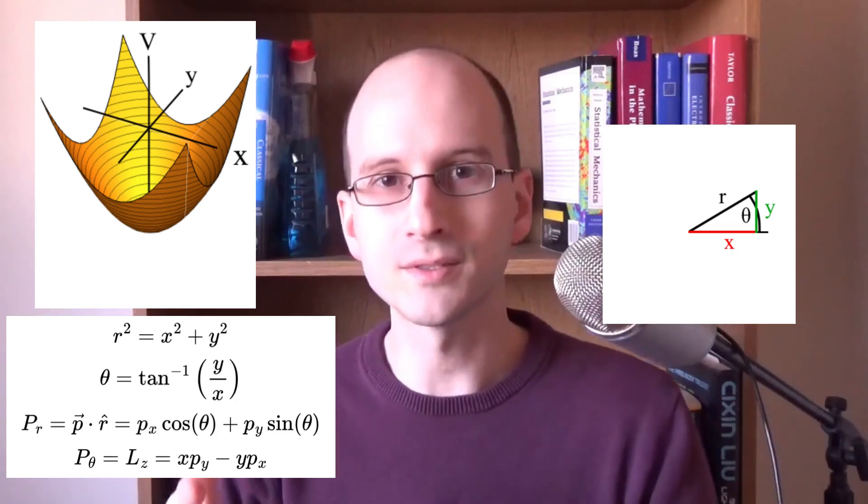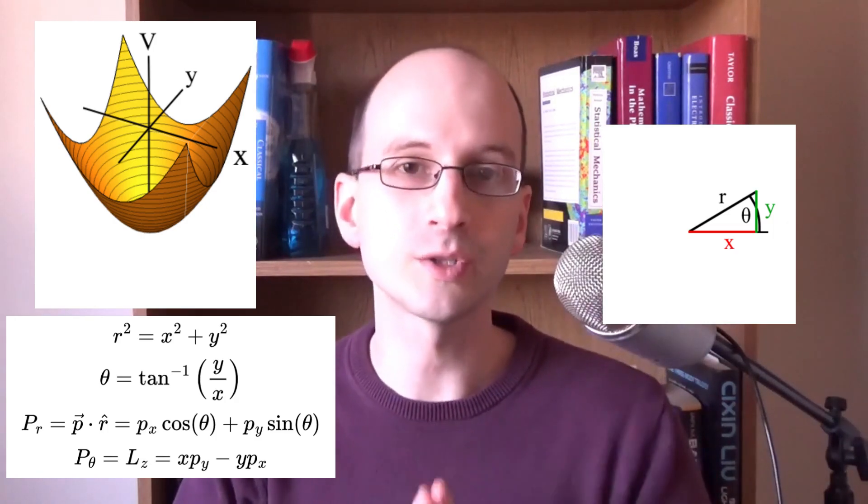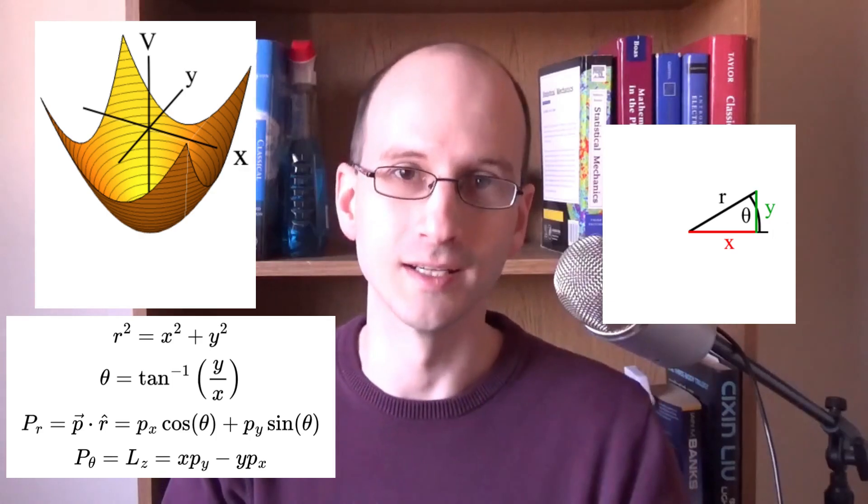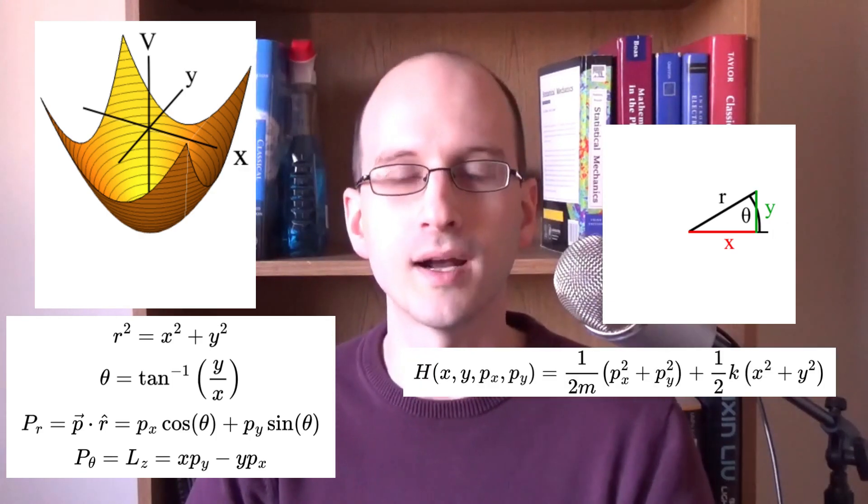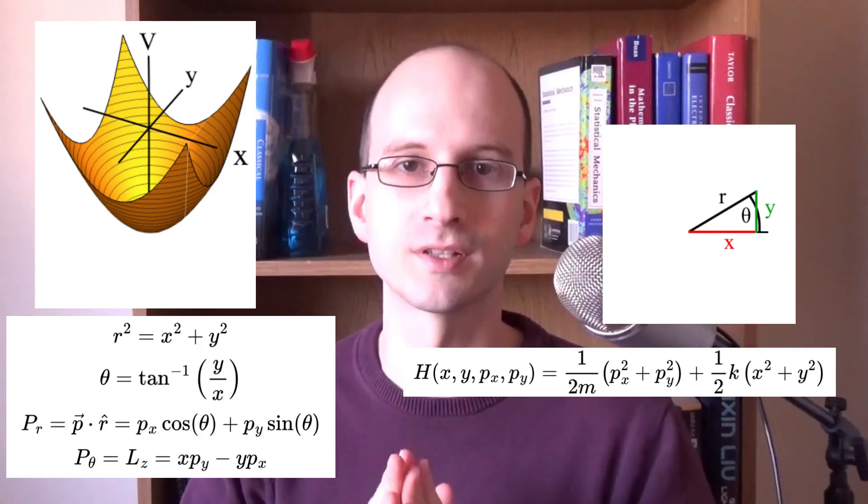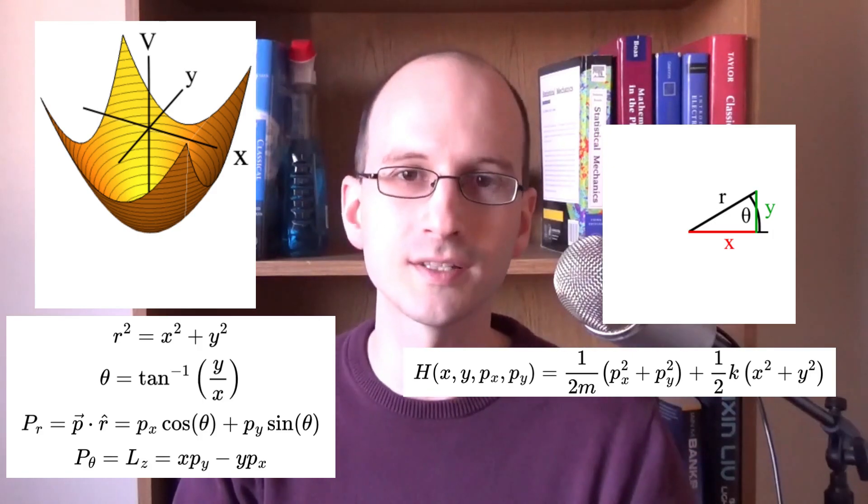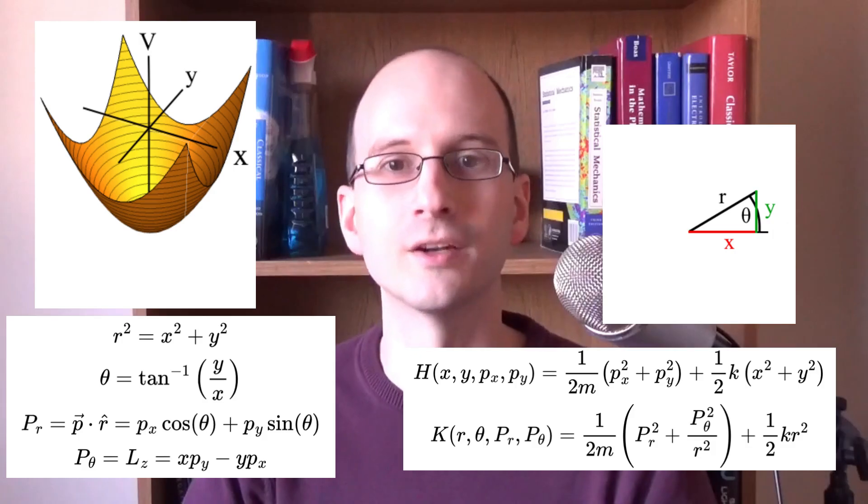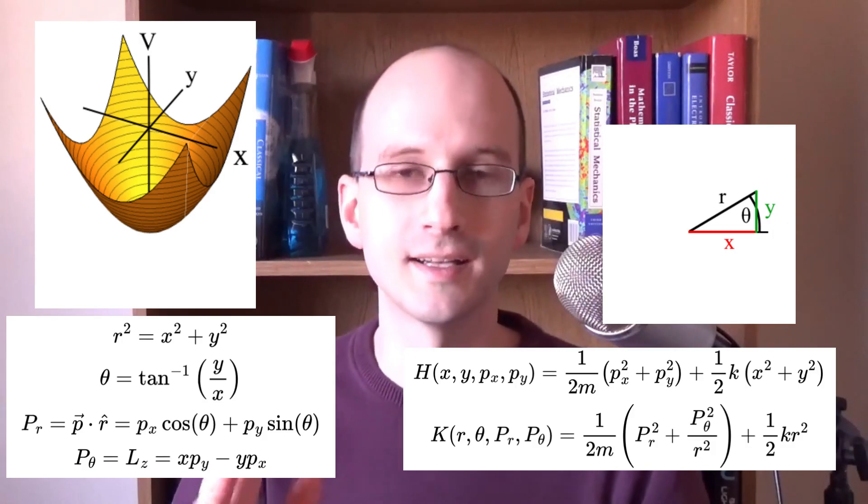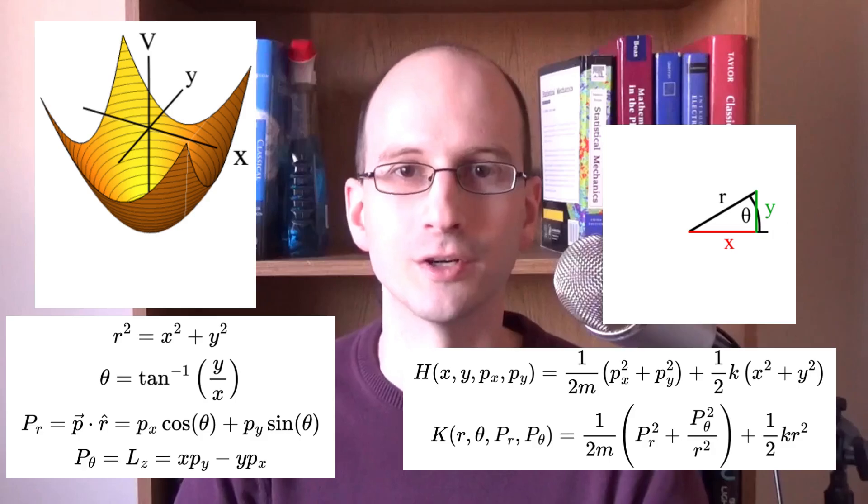When we transform a physical system's coordinates, we also have to transform its Hamiltonian into these coordinates. But here's what our 2D harmonic oscillator Hamiltonian looks like in x and y coordinates, and here's what it looks like in r theta coordinates. We've got kinetic energy terms and a potential energy term.